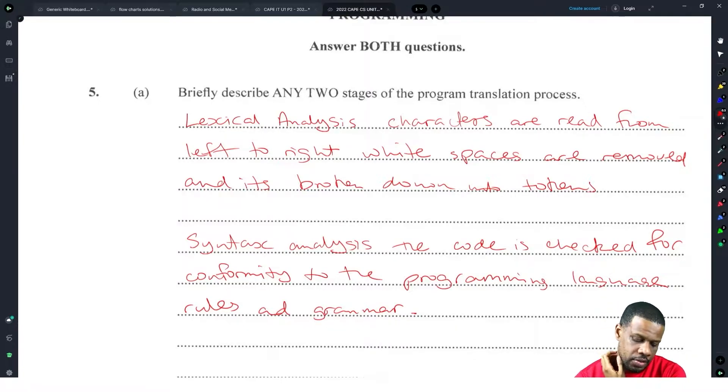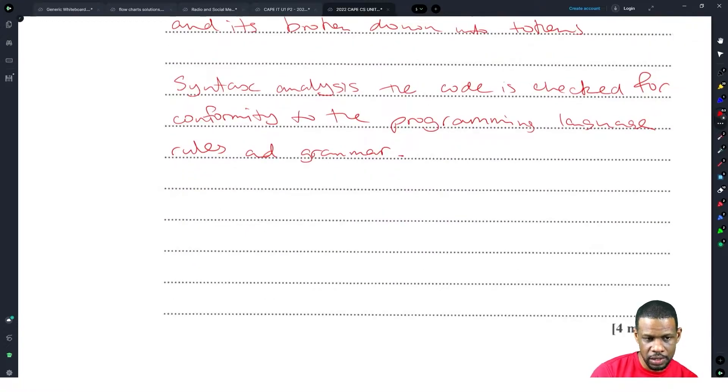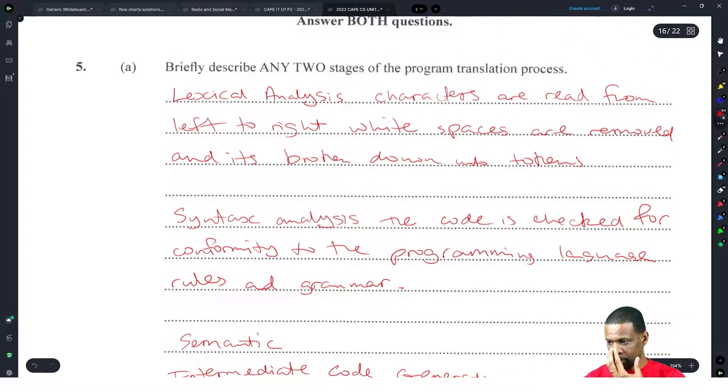After that you have semantic analysis which will check flow of control and if statements. Then intermediate code generation, code generation, and code optimization. Four marks, I don't know what to say.